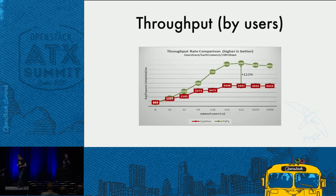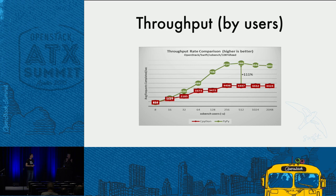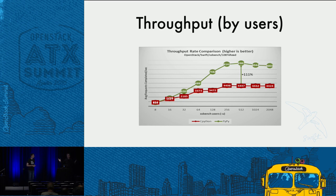We also measured throughput — how many things in parallel can you get through this cluster. As you continue to add users, throughput is really plateauing on CPython, but PyPy is doing extremely well. We have one data point where it's 111% improvement. Working in data center performance for about 15 years, you can claw and scrape to get 10% on a real customer workload — like running WordPress or Wikipedia — working all year long. Getting 111% is kind of gobsmacking. This really gets my attention.